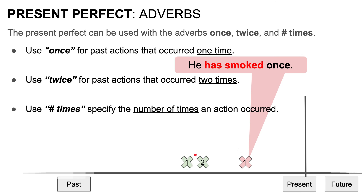We have gone to Italy — we traveled there many times. We have often gone to Italy. We use often to emphasize the frequency of past actions.